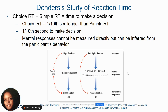This tells us that mental processes can't be measured directly, but can be inferred from a participant's behavior. In other words, we can't go inside a person's mind to know what they're thinking, so we have to make inferences based on their behaviors to understand what they meant.